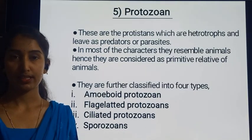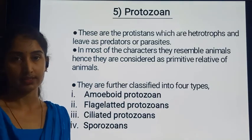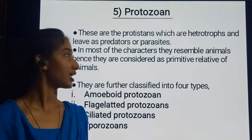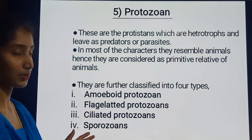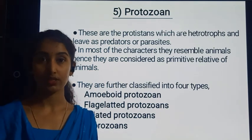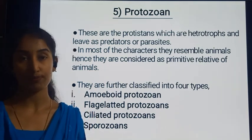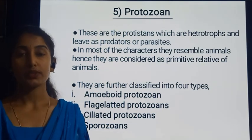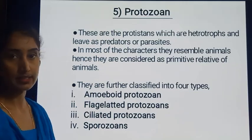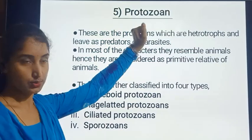In the previous class, we were discussing about Kingdom Protista, which has been grouped into 5 different groups. We had discussed 4 different types in the previous session. In today's video, we shall discuss the last type under Kingdom Protista — the 5th type — Protozoans.